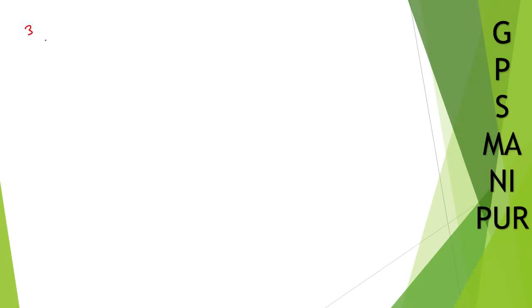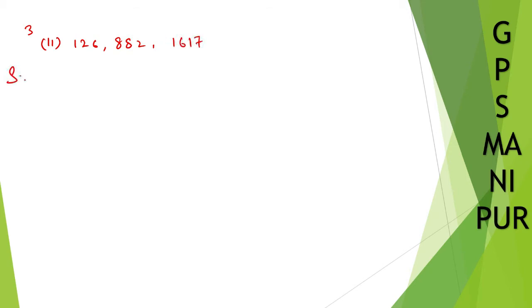We are doing question number 3, Roman numeral 2. We need to find the HCF and LCM of 126, 882, and 1617 by using the prime factorization method.